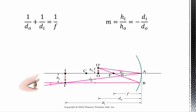Now let's look at some equations. Using a bit of geometry — it's derived in your book if you want to see it — we get what is called the mirror equation. You get: inverse of object distance plus inverse of image distance equals inverse of focal length: 1/do + 1/di = 1/f. You cannot just invert this whole equation. If there was just one fraction on each side you could, but because you're adding fractions on the left side, you can't do that.